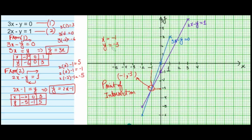To recap: the first step was creating a table for the first line, then creating a table for the second line, then plotting those points to obtain straight lines for each equation. Where these two straight lines intersect each other, that point of intersection is the solution of the simultaneous linear equations.